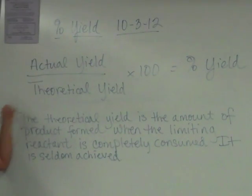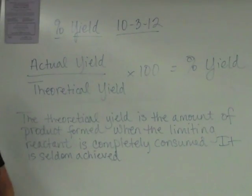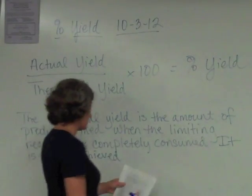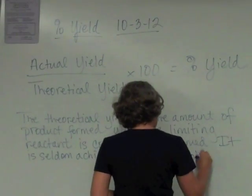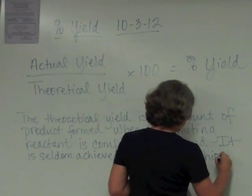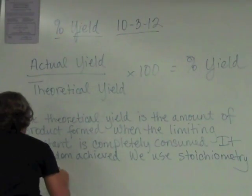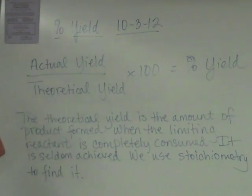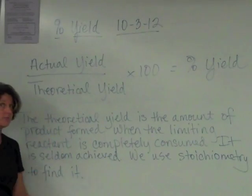How do we find the theoretical yield of a chemical reaction? How do we figure out how much product theoretically should be made? Well, that is what we have been talking about the last couple of days. We use stoichiometry to find it. We set up the problem, we utilize the mole ratio, and we come up with a theoretical amount of product that we should make.